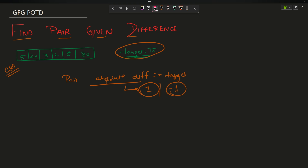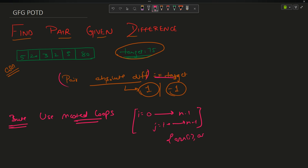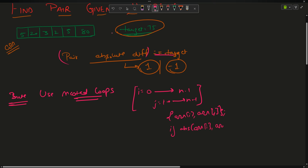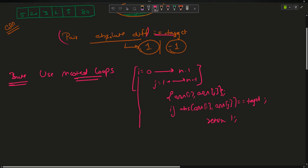It's a really easy problem. A brute force approach says to use nested loops to find all the pairs — run a loop from i equals zero to n minus one, and j equals i plus one to n minus one. For each pair arr[i], arr[j], check if abs(arr[i] - arr[j]) equals target; if so, return 1. If the outer loop finishes without finding any pair, return minus one.